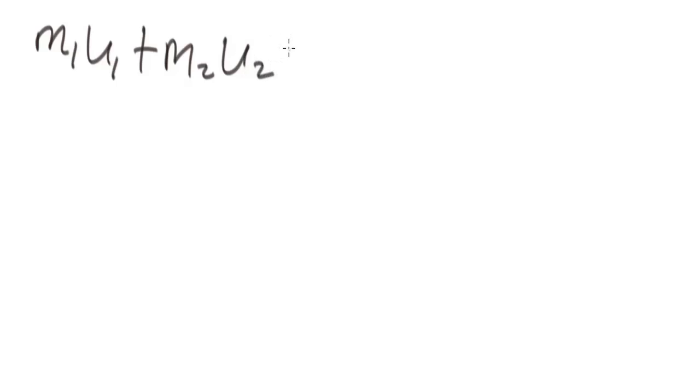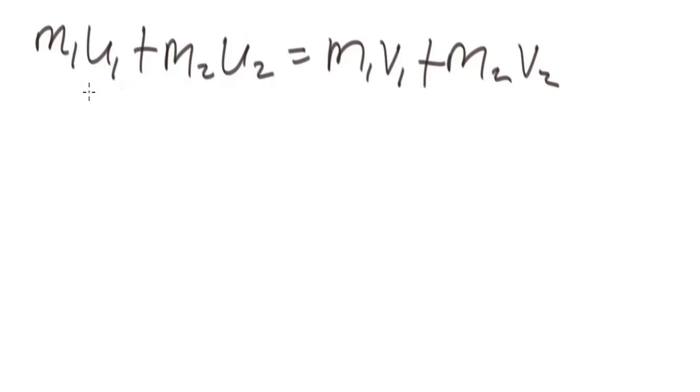Basically, there are two types of collision in physics. We have the perfectly elastic collision and perfectly inelastic collision. Perfectly elastic collision is a type of collision in which both kinetic energy and momentum are conserved, and it can be calculated using M1U1 plus M2U2 equals M1V1 plus M2V2. Whereas perfectly inelastic collision is a type of collision in which only momentum is conserved.